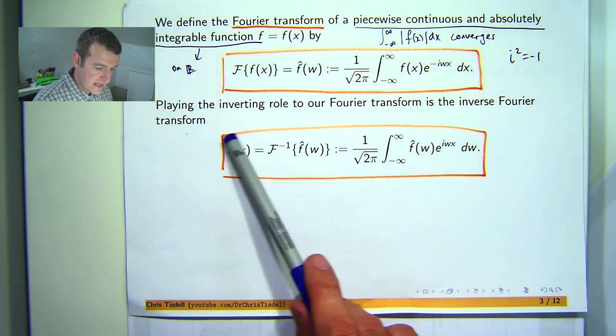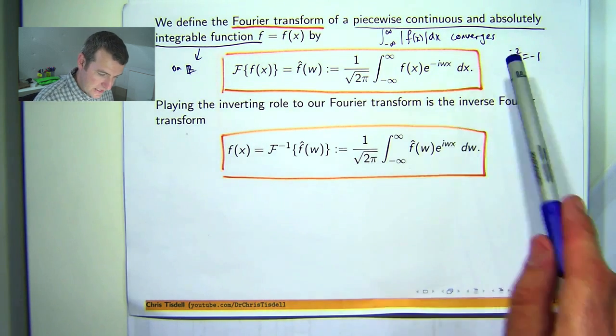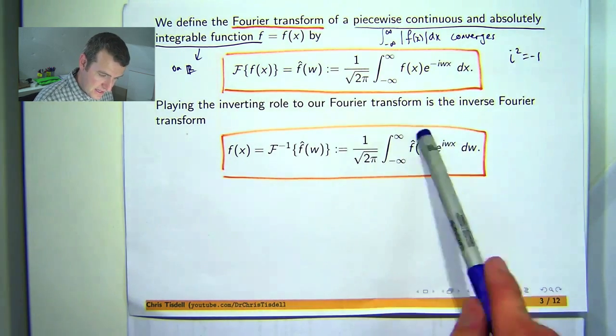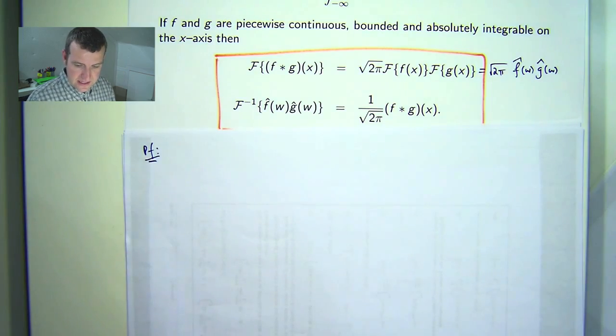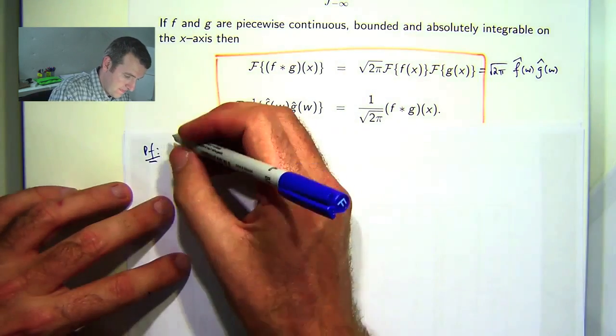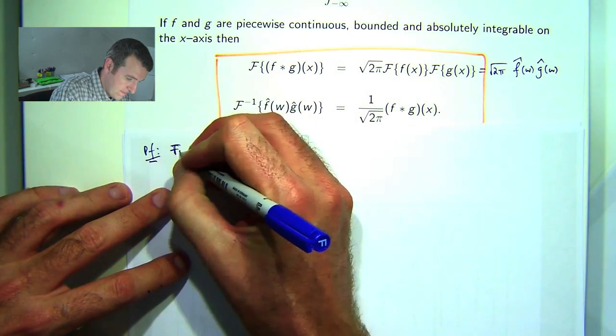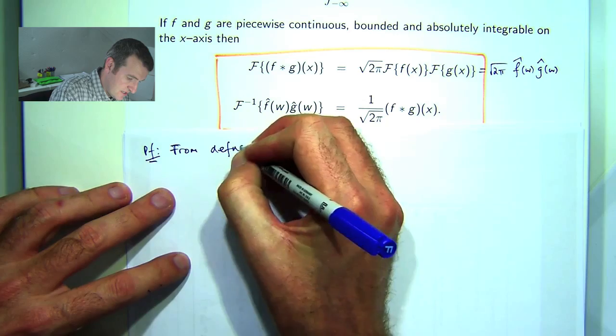So basically if you wanted to write f of x out here, you could actually take this because this is f-hat and plug it in here. So, from our definitions, we're going to prove this here.